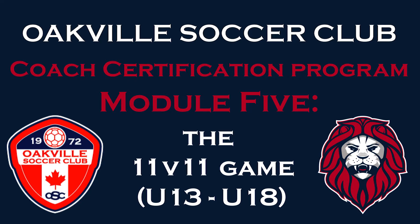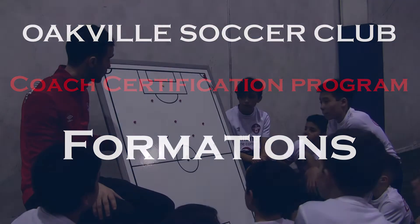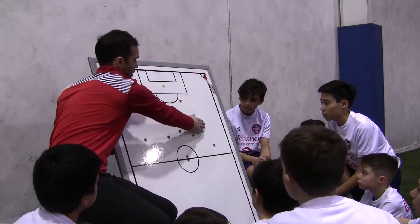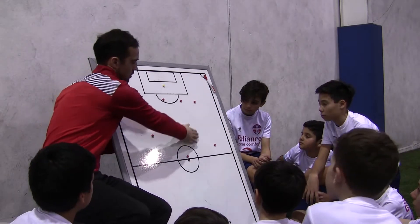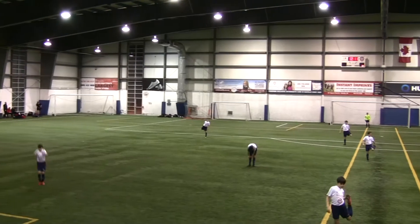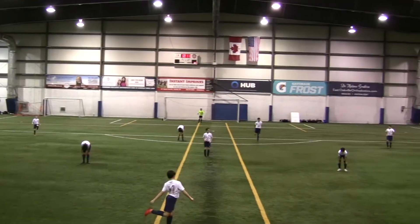Let's begin with the formation commonly seen at this stage. Watch as the coach explains a 1-4-3-3 formation to the players. This consists of one goalie, four defenders, three midfielders, and three forwards. Other recommended formation options can be found on OSC's website under coaching resources. Take a look at the players properly set up in a 1-4-3-3 formation on their side of the field.